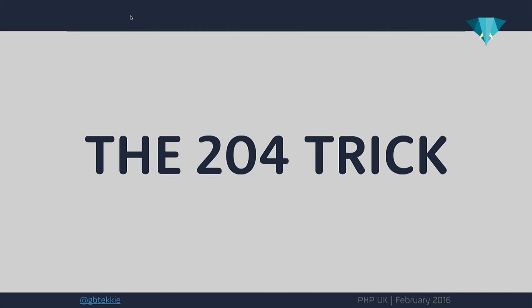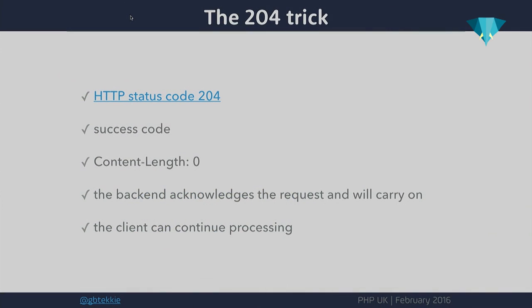Does anybody know what HTTP status code 204 means? No content. Correct — 204 is an HTTP status code. It represents a success code saying that everything went fine, but it doesn't offer anything in return. The specific bit about 204 is that the actual content transmitted back as a response is zero — you can't put anything in the response of a 204.